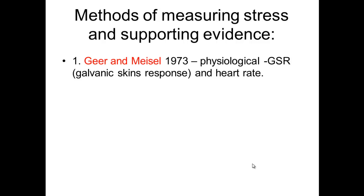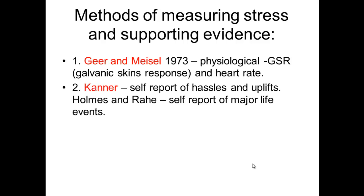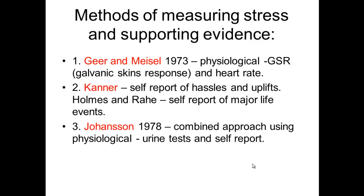To summarise, when thinking about a physiological measure you can refer to the Girian-Maisel study and the galvanic skin response — they did use heart rate but it wasn't ultimately used in the results and conclusions. For self-report, you can talk about Kanner and his measure of hassles and uplifts, or the Holmes and Rahe study on major life events. For a combined measure, you can talk about Johansson and the Swedish sawmill with his urine tests and self-report. And for physiological, you can even refer to Riker and Haslam from the AS course if you wanted.